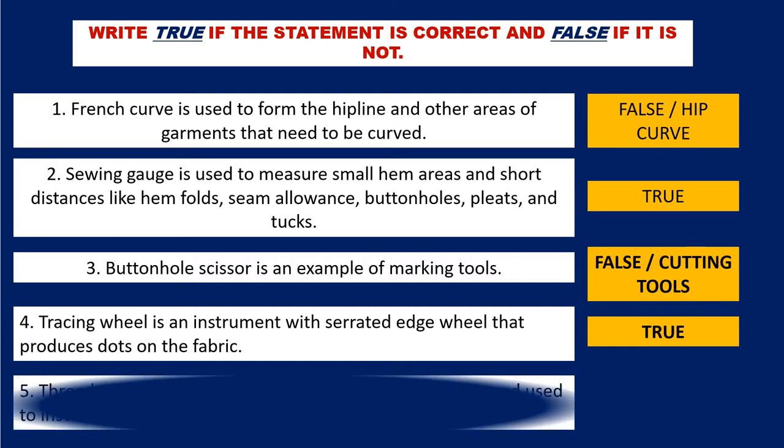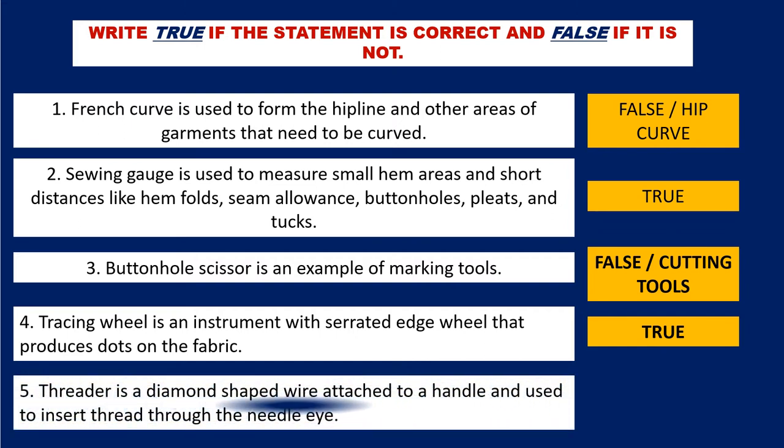Number 5: Tracing wheel is a diamond shape wire attached to a handle and used to insert thread through the needle eye. The correct answer is true.